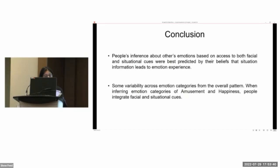So to conclude, we can say that from our work, people's inferences about others' emotions, based on access to both facial and situational cues, were best predicted by their beliefs that situation information leads to emotion experience. But that there is some variability across emotion categories from this overall pattern.